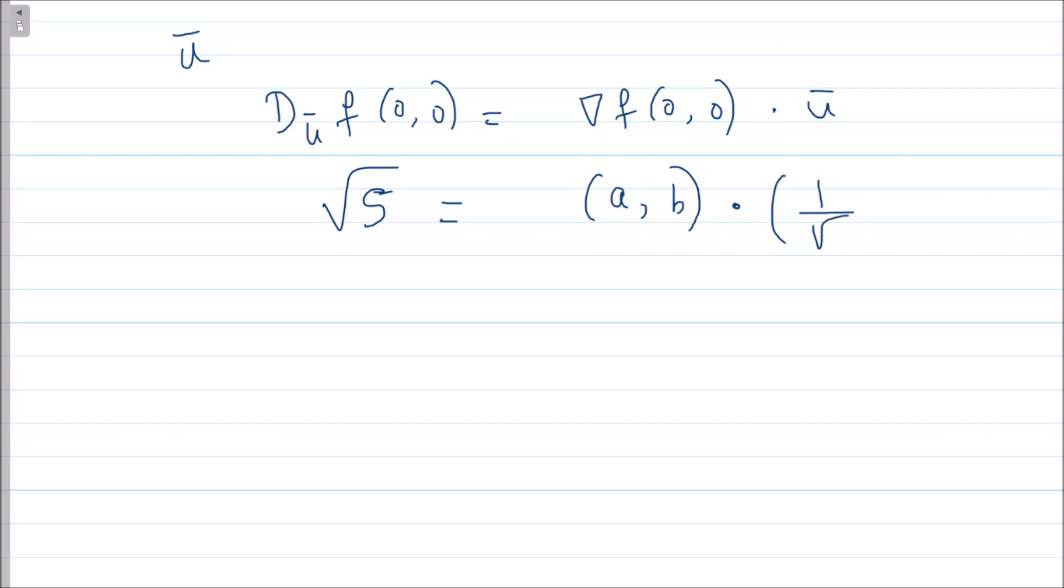Now if I take the dot product, this is (a + 2b)/√5, and if I take √5 to the left hand side I get 5. So this is my equation 1.